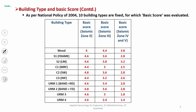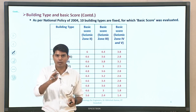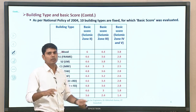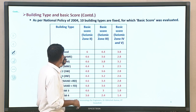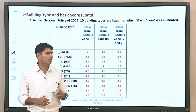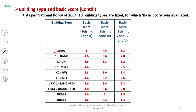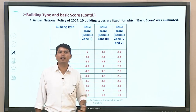The 10 building types start with wooden structures. Depending upon the type of building and the seismic zone, you get different values of basic score. Lower basic score indicates more vulnerability. For wood in seismic zone 2 the basic score is 6; in seismic zone 3 it reduces to 4.4; and for seismic zones 4 and 5 the basic score is 3.8. So the building remains the same but the score varies with seismic zone.